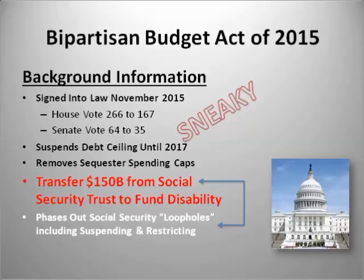Interestingly, they transferred $150 billion from the Social Security trust fund — which was in better shape — into the disability trust fund, because in 2016 the disability trust fund was running out of money. But to do that without depleting the Social Security trust fund, they phased out the loopholes — specifically the file-and-suspend and deeming strategies. The extra money that would have been paid out was technically redirected to the disability trust fund — robbing Peter to pay Paul on the backs of people close to retirement.